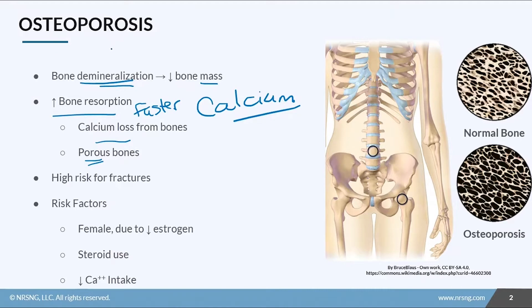Osteoporosis. If you look here, this is the normal density of a bone, and this is the density of a bone with osteoporosis — much less dense than a regular bone. Think of it like wood: a normal bone is like hardwood, but osteoporosis makes it more like styrofoam.